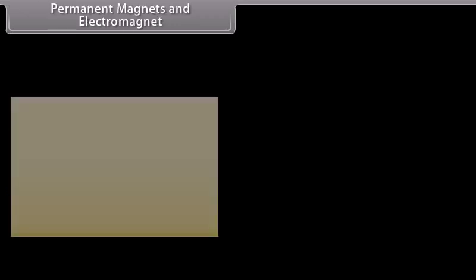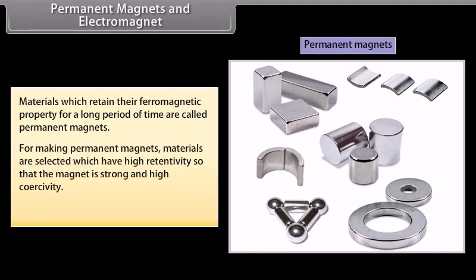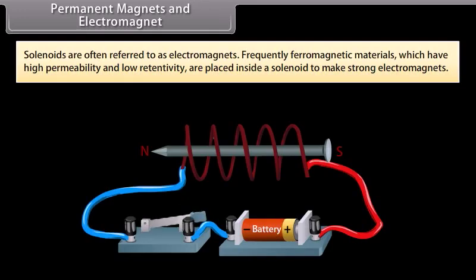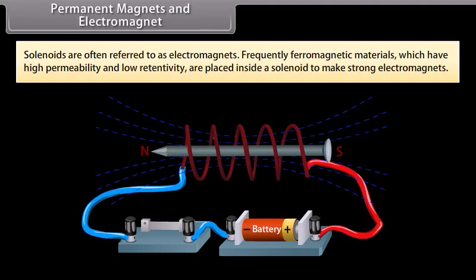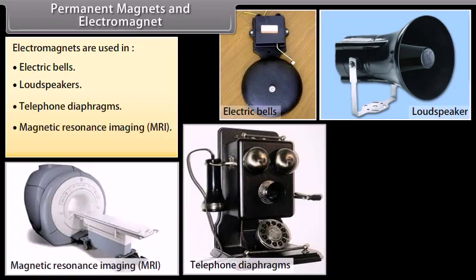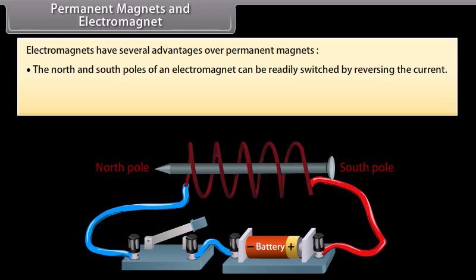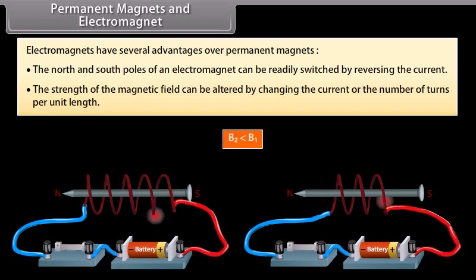Materials which retain their ferromagnetic property for a long time are called permanent magnets. For making permanent magnets, materials with high retentivity and high coercivity are selected — for example, steel, Alnico, and cobalt steel. Solenoids referred to as electromagnets often have ferromagnetic materials with high permeability and low retentivity placed inside to make strong electromagnets. Electromagnets are used in electric bells, loudspeakers, telephone diaphragms, MRI, and cranes to lift heavy materials. Advantages of electromagnets include: poles can be switched by reversing current, and field strength can be altered by changing current or number of turns per unit length.